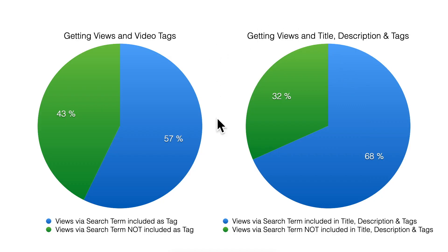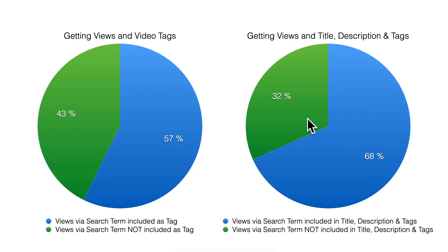We also know that not only tags are important — titles and descriptions are important too. I did the same study for title, description, and tags combined. 68% of all views that videos get via YouTube search are from search terms included in either the title, description, or tags. But still, one third of all views come from search terms that are nowhere in the metadata.